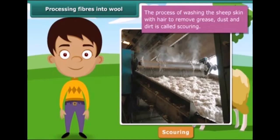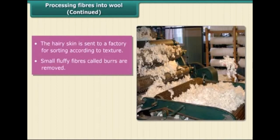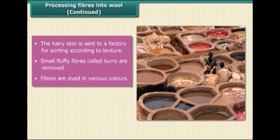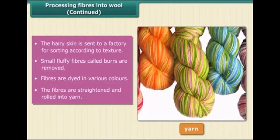The washed hairy skin is sent to a factory where hairs of different textures are separated or sorted. The small fluffy fibers called burrs are picked out from the hair. Fibers are dyed in various colors. As the natural fleece of sheep and goats is black, brown, or white, the fibers are straightened and rolled into yarn, and finally the wool is ready to use.